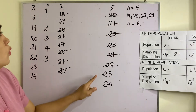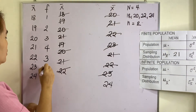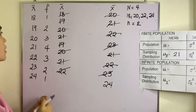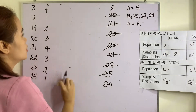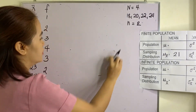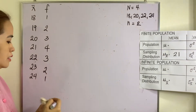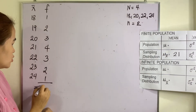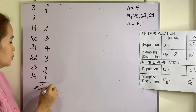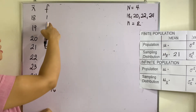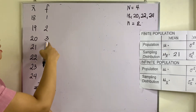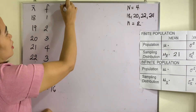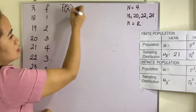We have 23: frequency 1, 2, and we have 24: frequency 1. The next step is to get the probability. Remember that our total here is the summation of f, which is equivalent to 16. So 3 plus 3 is 6, plus 4 is 10, plus 6 is 16.